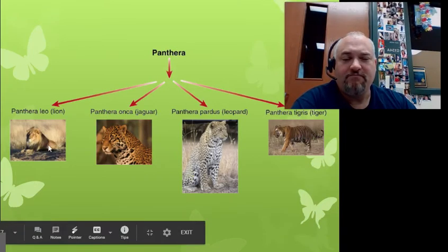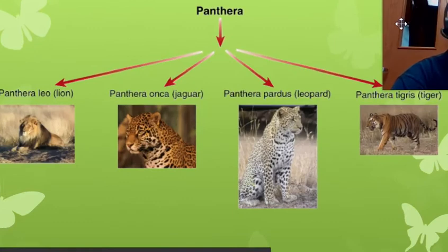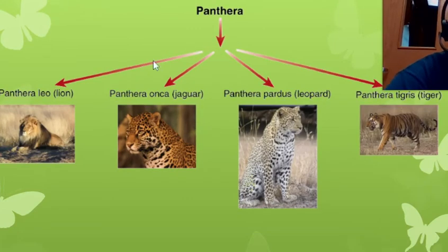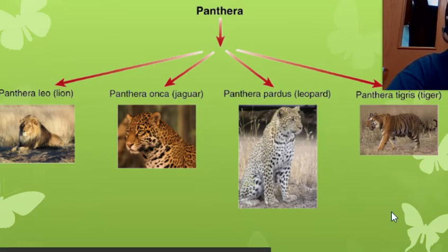Here we have a picture of different big cats — lions, tigers, panthers, leopards, jaguars. They are all part of the same genus, Panthera, so they all start with Panthera in the scientific name because they're closely related. But they're not the same species — their species names are different: leo for lion, onca for jaguar, pardus for leopard, tigris for tiger.